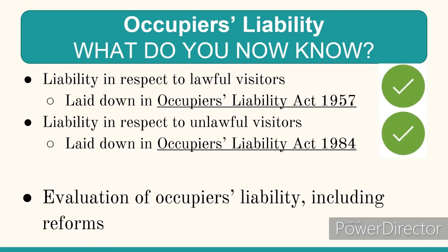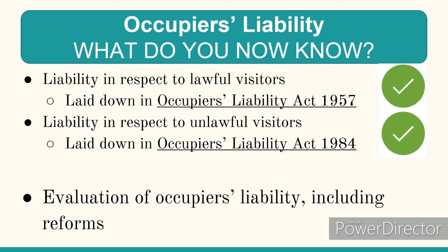For exam questions on occupier's liability for OCR A-Level, the question will present a scenario that you need to apply the law to. The first thing to do is work out whether the person is a lawful or unlawful visitor — perhaps they start as a lawful visitor and then become an unlawful visitor. You should now know the law in respect to both the Occupier's Liability Act 1957 for lawful visitors and the Occupier's Liability Act 1984 for unlawful visitors. A third lesson in this series will cover an evaluation of occupier's liability.